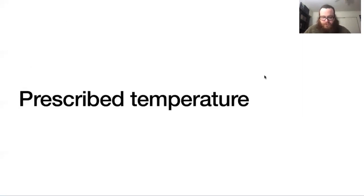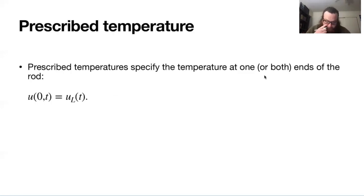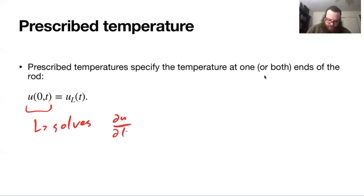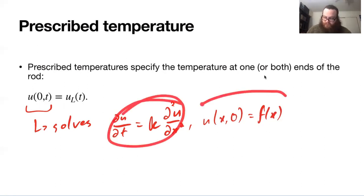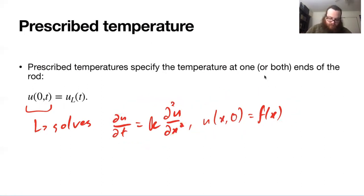When we say prescribed temperature at the boundaries, what does that mean mathematically? We're saying that u is a solution to the heat equation, with du/dt equal to k times d²u/dx², and the temperature at time zero has some distribution f. Then at x equals zero, we prescribe some temperature at each time t.